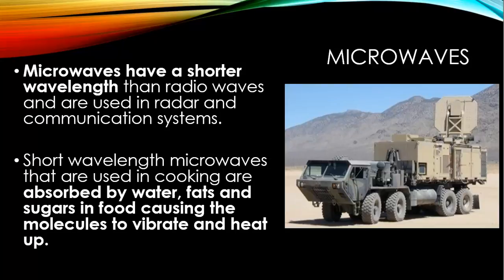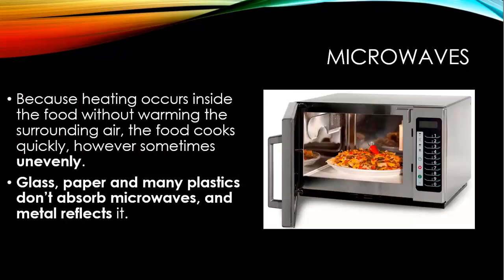Microwaves have a shorter wavelength than radio waves and are used in radar and communication systems. Shorter wavelength microwaves used in cooking are absorbed by water, fats and sugars in food, causing the molecules to vibrate and heat up — that's the idea of particle theory. On the right we've got a vehicle with a microwave transmitter as part of their radar system. Because heating occurs inside food without warming the surrounding area, the food cooks quickly, however sometimes unevenly — you've probably experienced the outside being hot and the inside cold. Glass, paper and many plastics don't absorb microwaves, and metal reflects it.